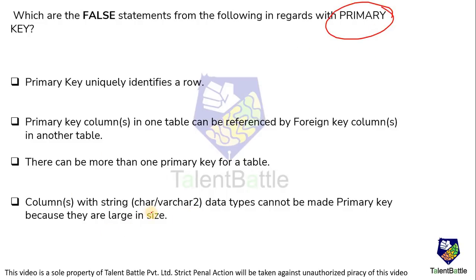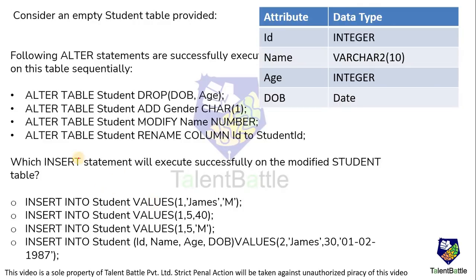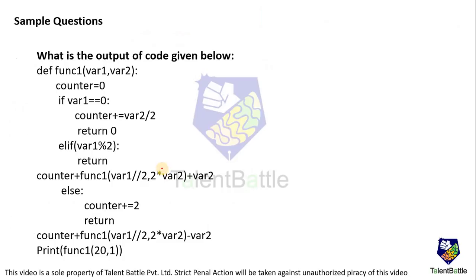This question is related to primary key information - which are the false statements from the following in regards to primary key. Another was related to the alter table command. So all the commands of DDL, DCL, and DML - if you work on these commands, you can easily solve questions similar to this. This question was related to Python - the function concept, and apart from that, if-else and control flow statements, looping statements, and flow control mechanism. These are important concepts that if you are preparing for the same, you can easily solve the questions related to that.